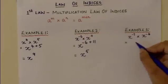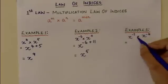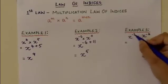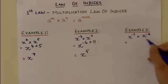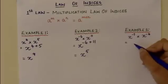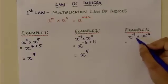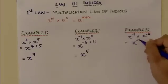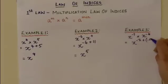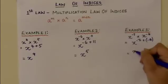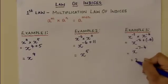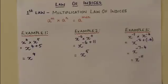Applying the multiplication law of indices for example 3: the variable x is raised to minus 7 and minus 4, and it is multiplied together. So the simplified version will be the sum of the two powers, which is minus 7 plus minus 4, which is equal to x to the power of minus 11.